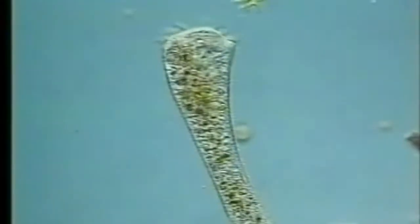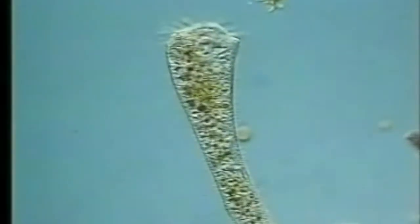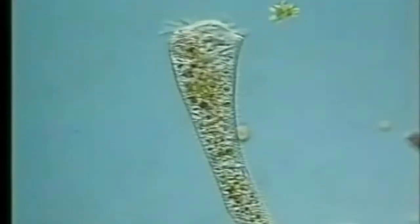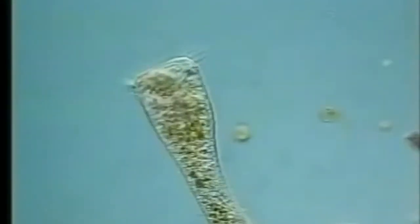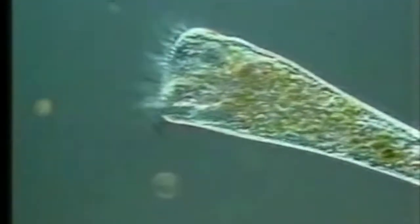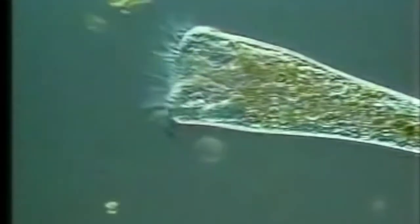While the non-motile cilia or primary cilia were thought to be evolutionary vestigial organs, they are now recognized as playing crucial roles in a number of organs. Some act as sensor antennae for the cell, receiving signals from other cells or fluids nearby. In the kidney, for example,